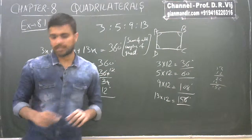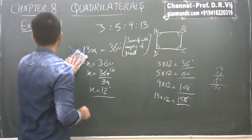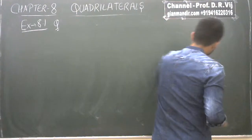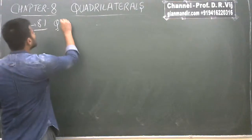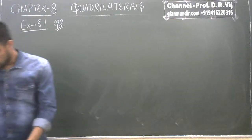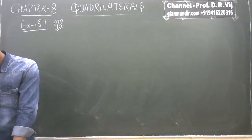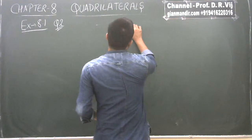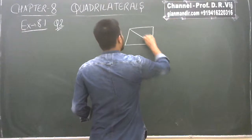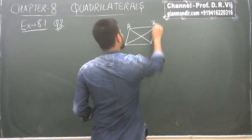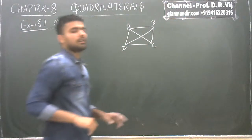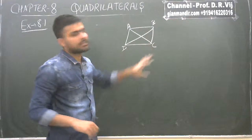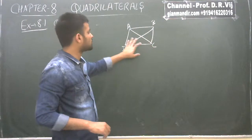This was question number one. Let's move on to question number two. Question number two says: if the diagonals of a parallelogram are equal, then show that it is a rectangle. Let's take a parallelogram ABCD. It says if diagonals BD and AC are equal, show that it is a rectangle.